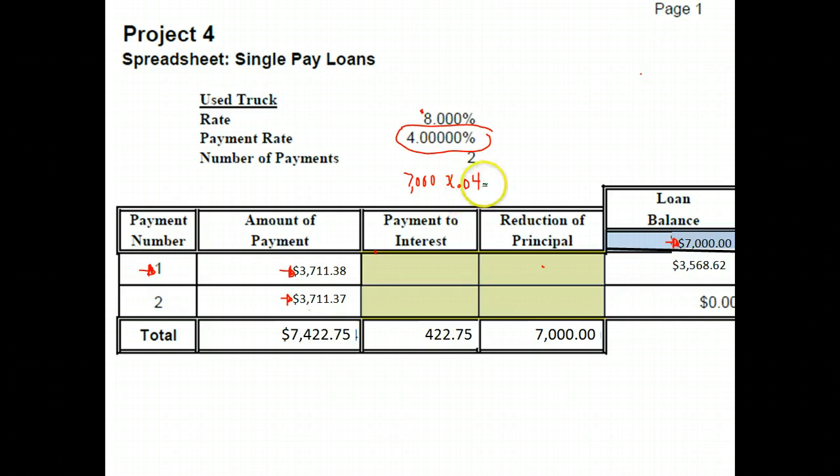So we take 7,000 times .04, and that gives us 280. So at that point, we would owe $280 in interest. So our payment to interest here would be $280.